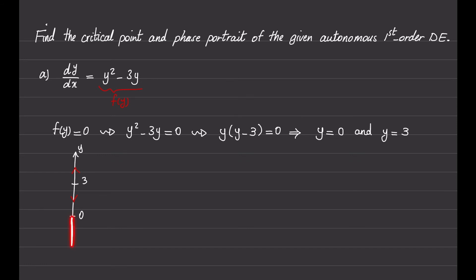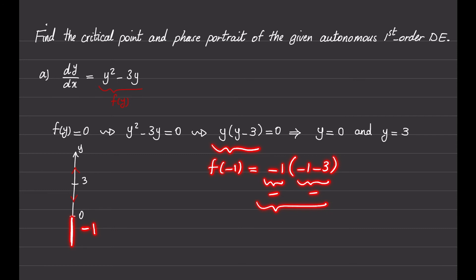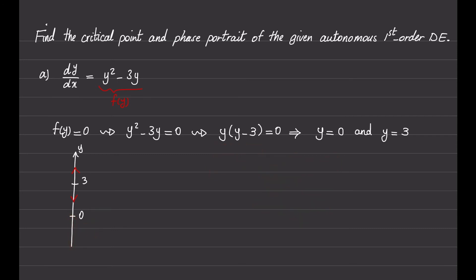Finally, the last region is for values of y less than 0. We pick negative 1. So f(-1) is minus 1 times minus 1 minus 3. Minus 1 is negative, and minus 1 minus 3 is also negative, so f(-1) will be positive. We will have an upward arrow in that region.